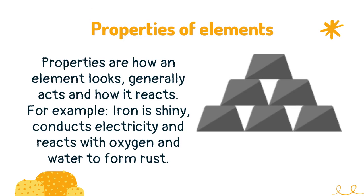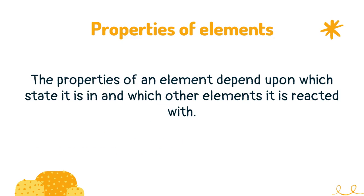Properties are how an element looks, generally acts, and how it reacts. For example, iron is shiny, conducts electricity, and reacts with oxygen and water to form rust. The properties of an element depend upon which state it is in and which other elements it is reacted with.